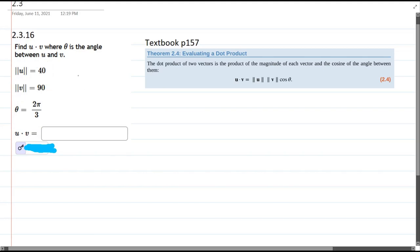So inside the dot product section of the textbook, we have this formula. Good news is, it uses the magnitudes and the angle.